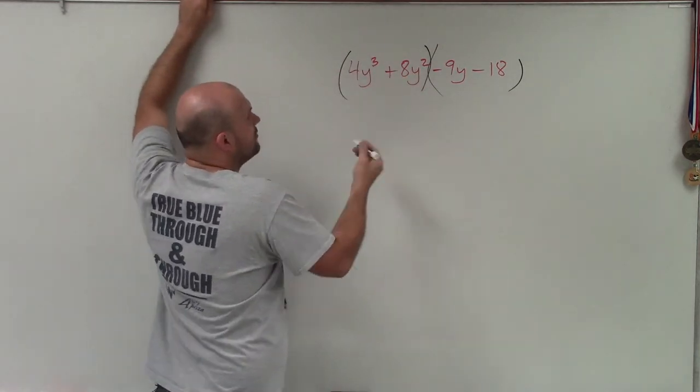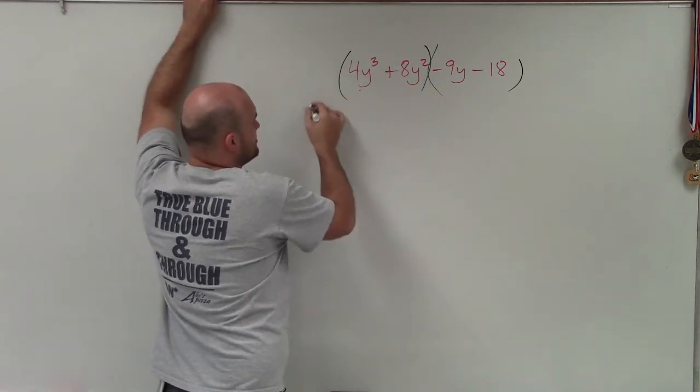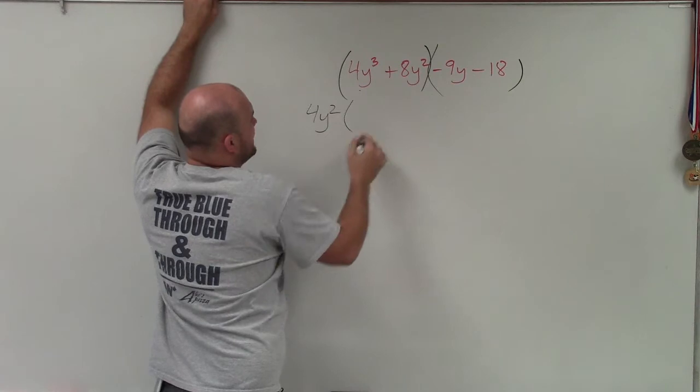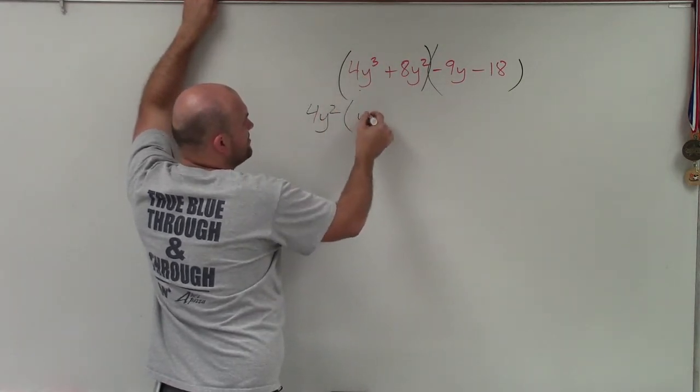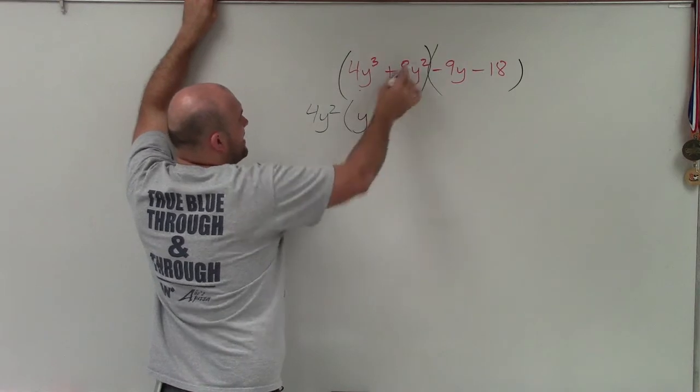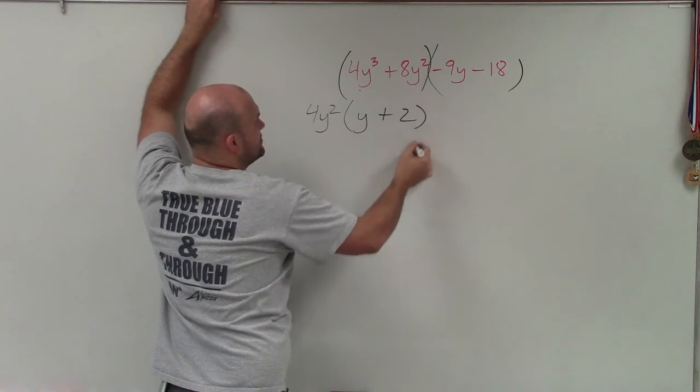I'm pretty much like dividing 4y squared by each expression. So I divide out 4y squared. So 4y cubed divided by 4y squared is just going to leave me with y. And then 8y squared divided by 4y squared is just going to leave me with positive 2.